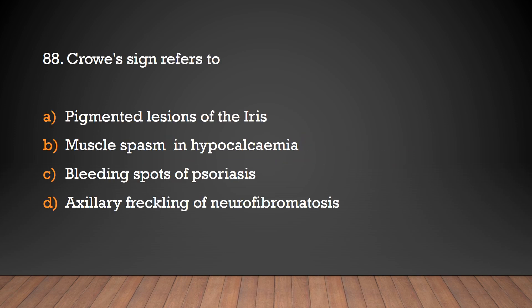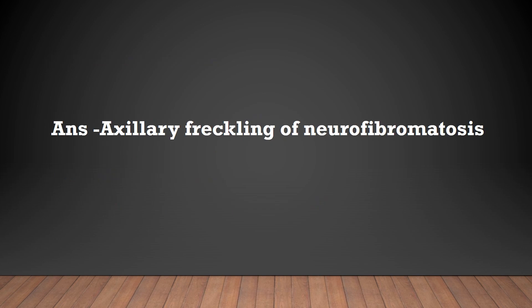Crowe sign refers to: pigmented lesion of the iris, muscle spasm, hypocalcemia, bleeding spots of psoriasis, or axillary freckling of neurofibromatosis? The answer is axillary freckling of neurofibromatosis.